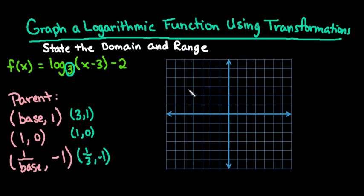Let's put those on the graph. The parent function goes through the points (1, 0), (3, 1), and (1/3, -1). The parent function gets closer and closer to the y-axis but will never actually touch it. This is our parent function.